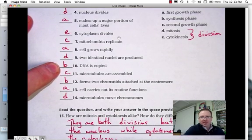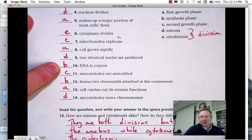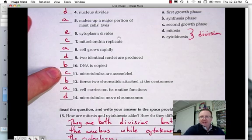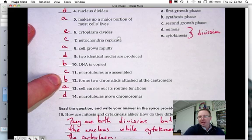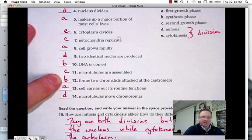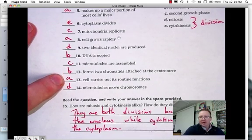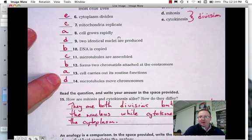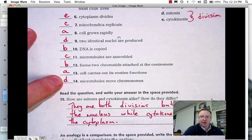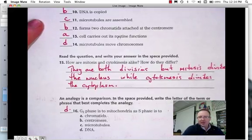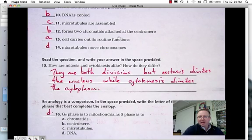Cells grow rapidly during the first growth phase. Two identical nuclei are produced during mitosis, because that's the division of the nucleus. DNA is copied during what's called the synthesis phase. Synthesis means to build or to make, so it's when new DNA is made. Microtubules are assembled in the second growth phase. Two chromatids are attached at the centromere at the end of the S phase. The S phase is when the DNA is replicated. That's when the single-stranded chromosomes become doubled chromosomes, or chromosomes consisting of sister chromatids held together at a centromere. Cells carry out their routine functions during the first growth phase, and then microtubules move the chromosomes during mitosis. That's the division of the nuclear contents.